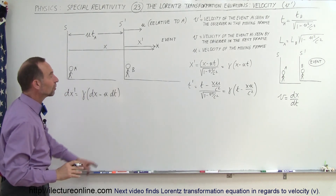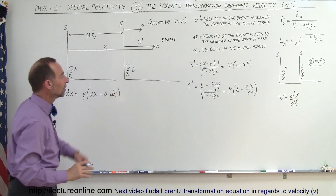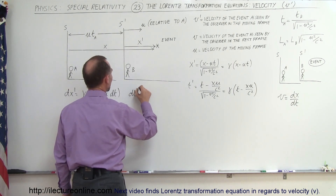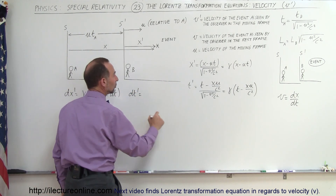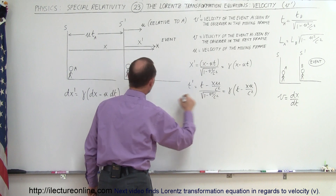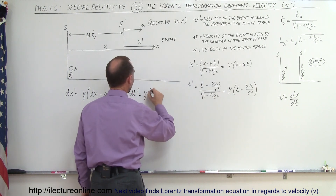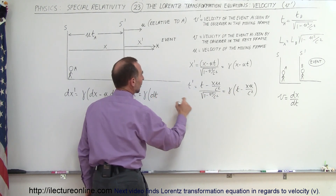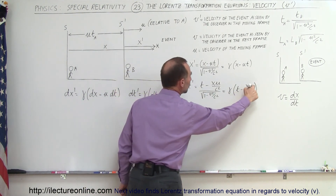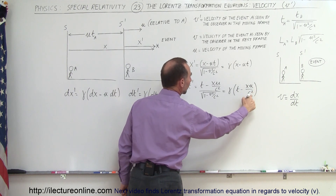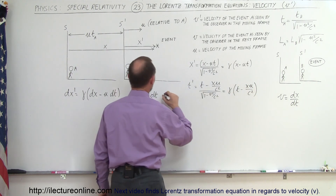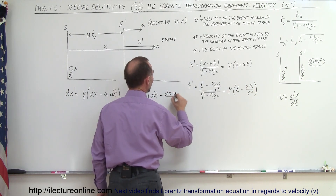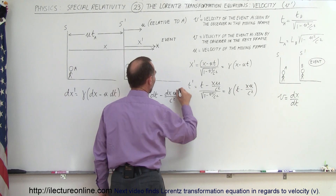We can do the same for the differential of T'. We can say that DT' is equal to gamma times the differential of T, which would be DT, and remember that U and C squared are constants, so we can write minus DX times U over C squared.